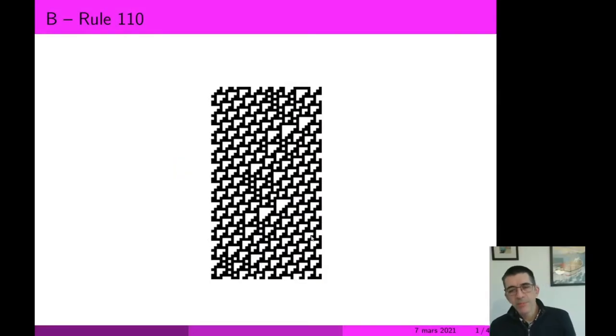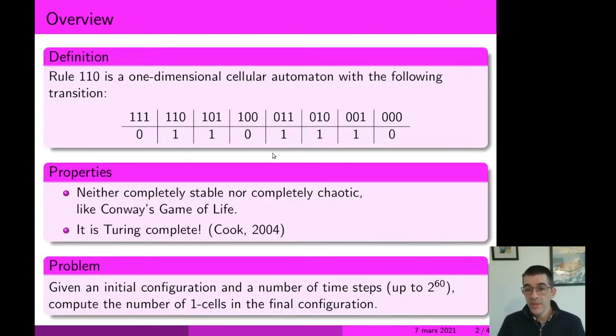In this problem we are exploring a very nice one-dimensional cellular automaton called Rule 110. This is an automaton where states are only zeros and ones, and the transition only considers the left and right neighbors. For instance, if the state is one and the two neighbors are one, we switch to zero.